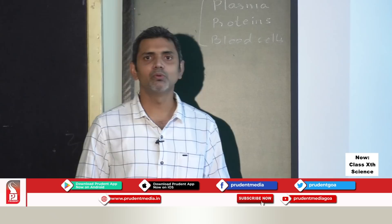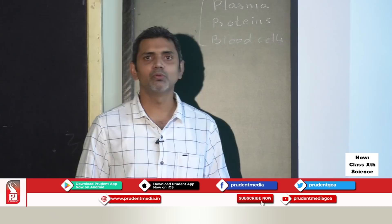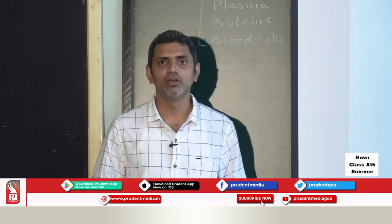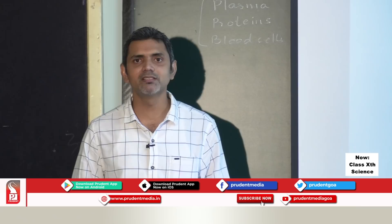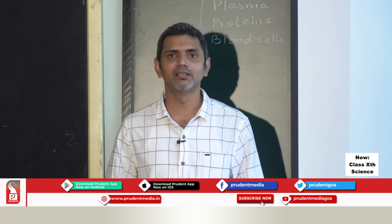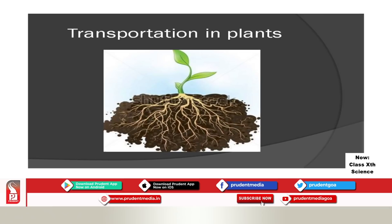The two tissues that help in transportation in plants are xylem and phloem. Xylem transports water and minerals in plants, whereas phloem transports soluble products of photosynthesis. Now let us learn how roots absorb water from the soil.